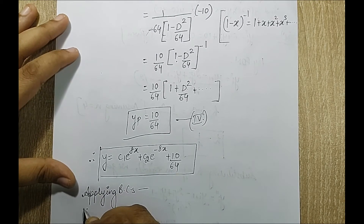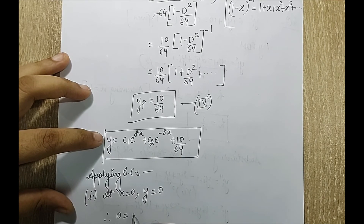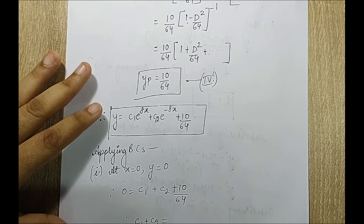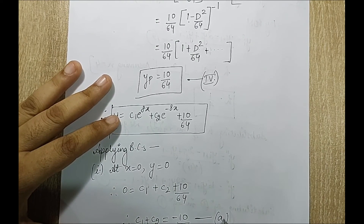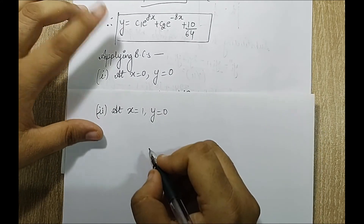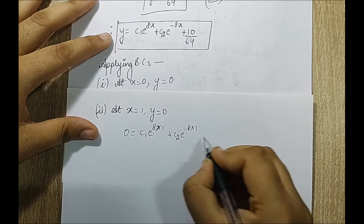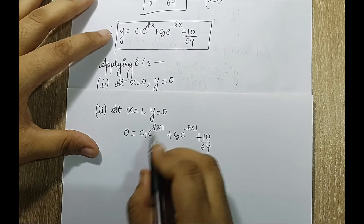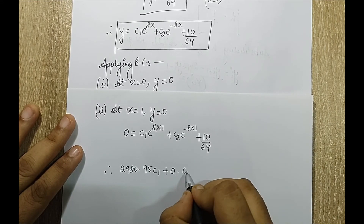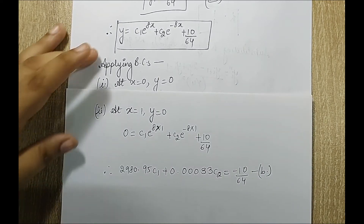Applying the first boundary condition at x equal to 0, y equal to 0: substituting gives 0 equals c1 plus c2 plus 10/64, so c1 plus c2 equals minus 10/64. I mark this as equation (a). Applying the second boundary condition at x equal to 1, y equal to 0: substituting gives 2980.95·c1 plus 0.00033·c2 equals minus 10/64. I mark this as equation (b).